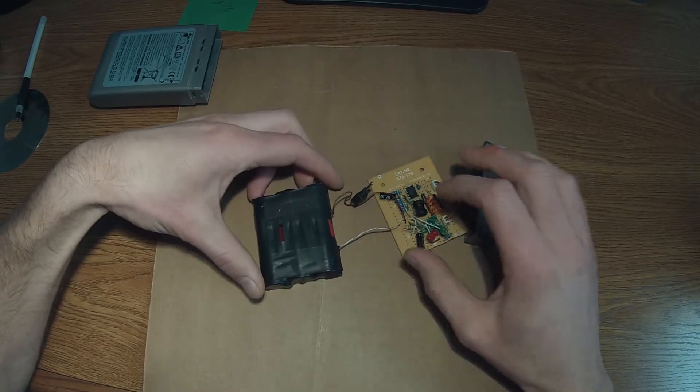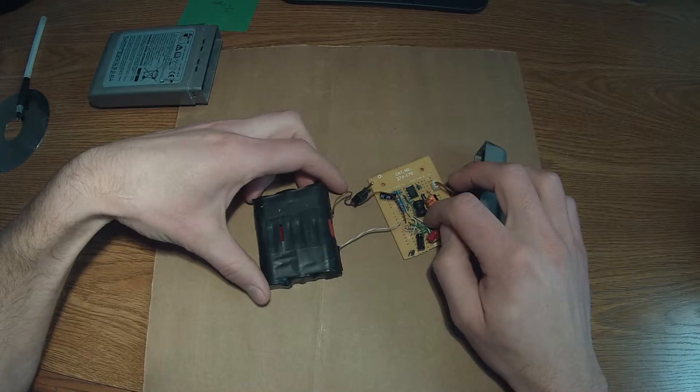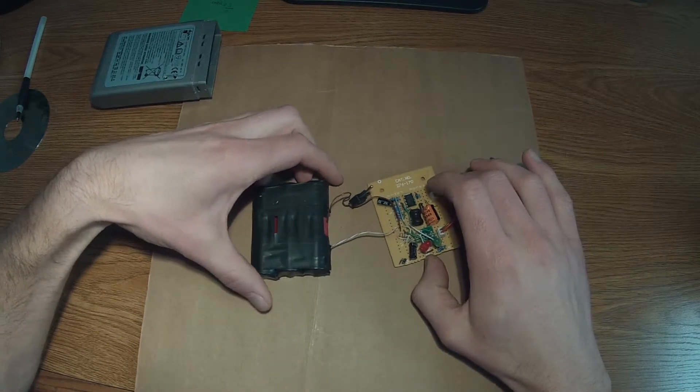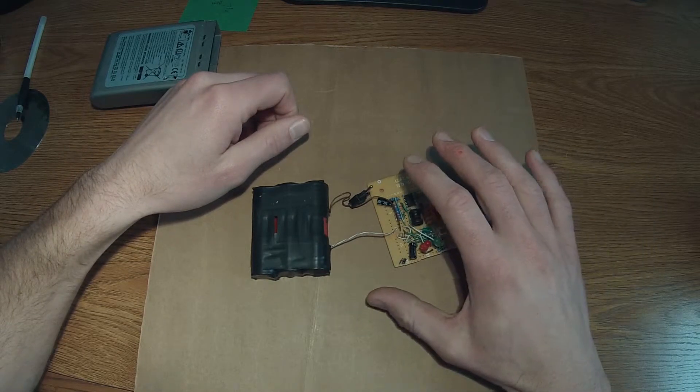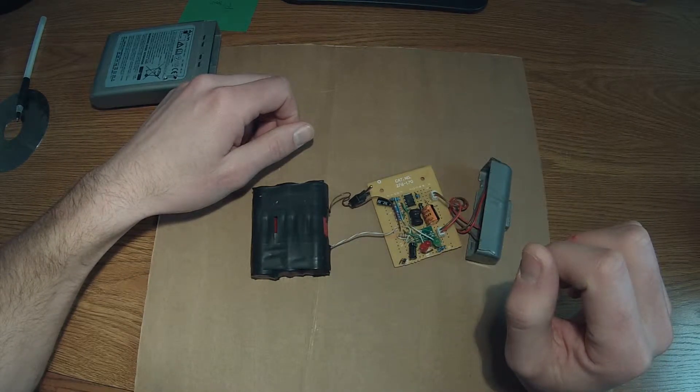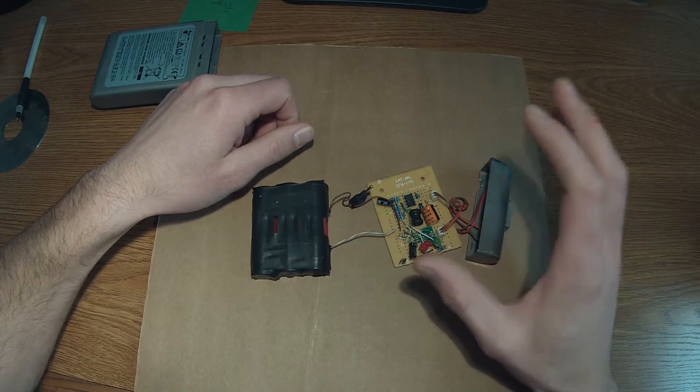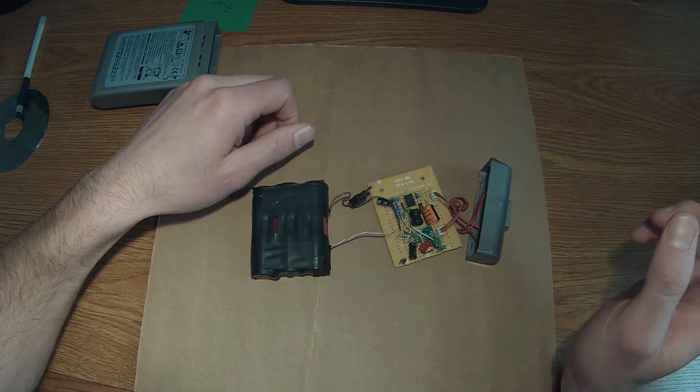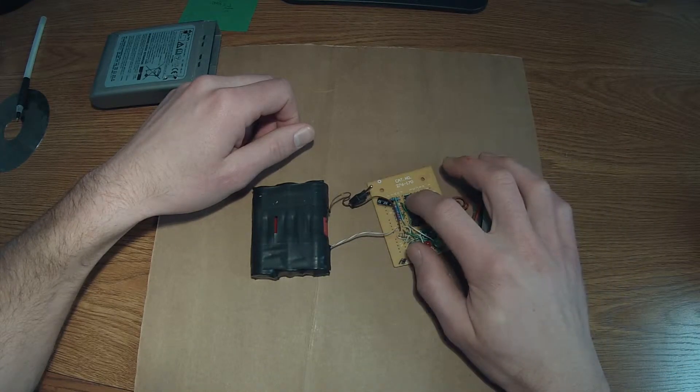So then we have the regulating circuit and the battery charging circuit too, kind of the essential circuits you'll need for a power bank. Also, a battery protection circuit would be nice, but in this case, with this chip,